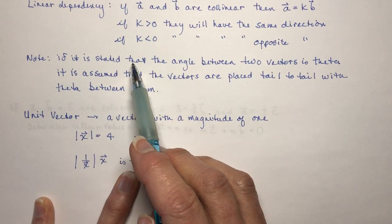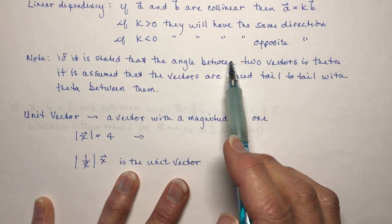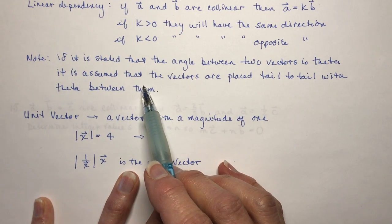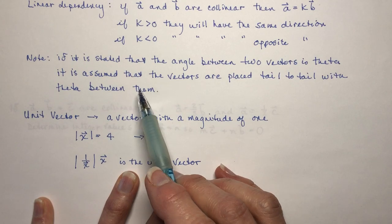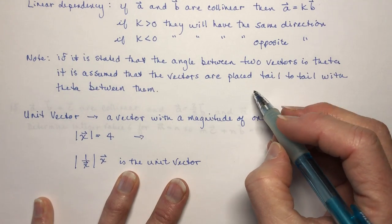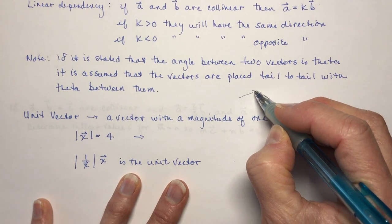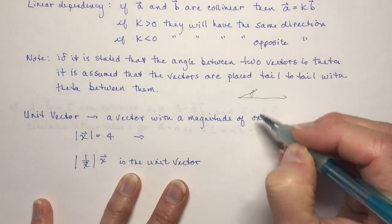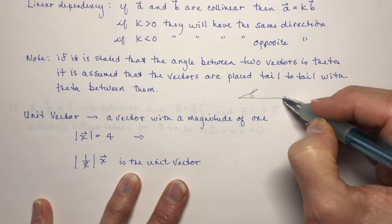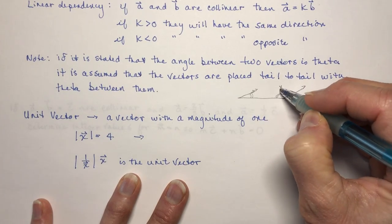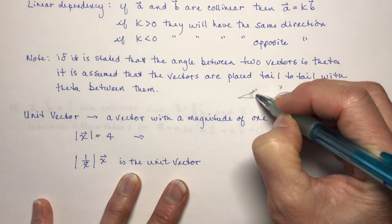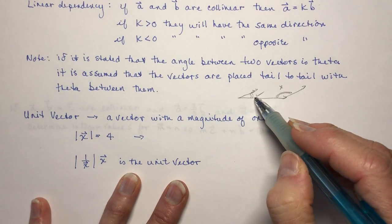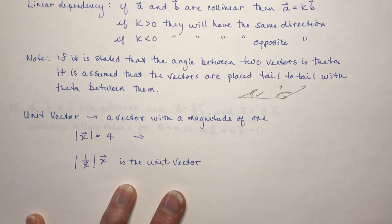Note: if it is stated that the angle between two vectors is theta, it is assumed the vectors are placed tail to tail with theta between them. I've seen students get this wrong — if I have vector A and vector B with an angle between them, it's this inner angle, not the outer angle. So be careful: tail to tail, and the angle is between them.